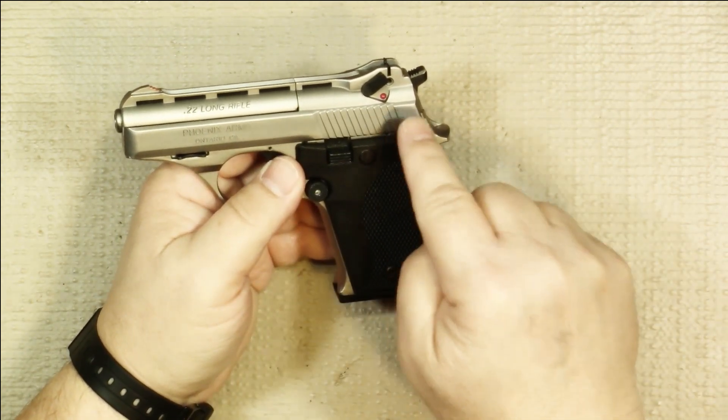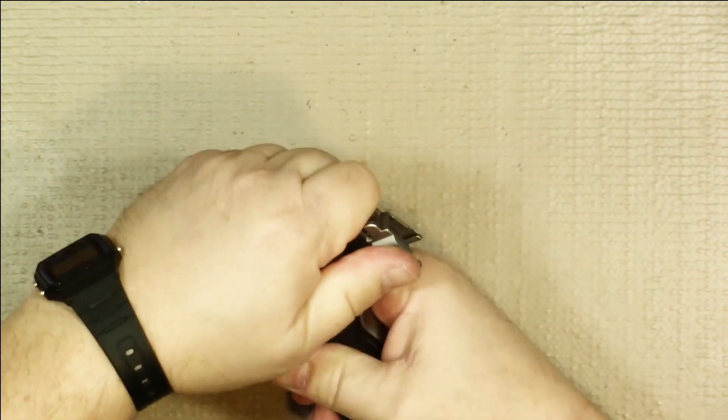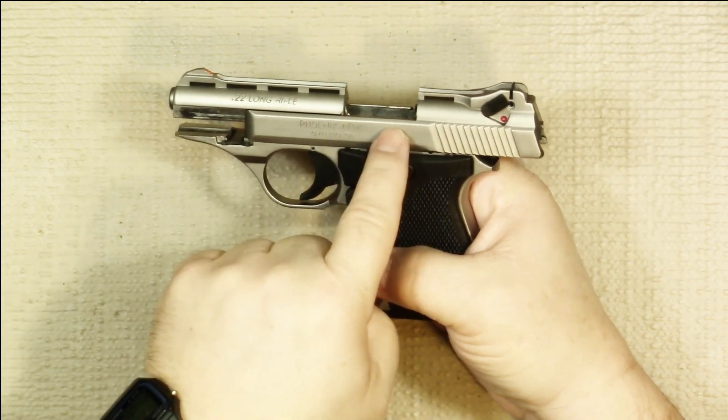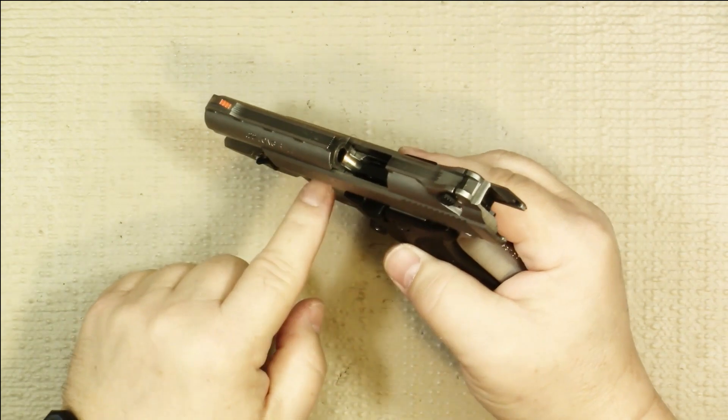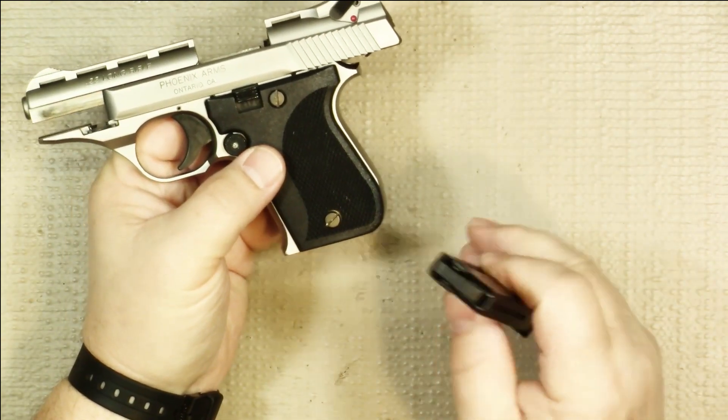We want the slide to be back anyway. So the first step would be to pull the slide back and then lift up on the safety and slide lock to lock the slide back. Now we can see that the chamber area is free and clear of any ammunition and since it's on safe, we can take the magazine out and it's also free and clear.